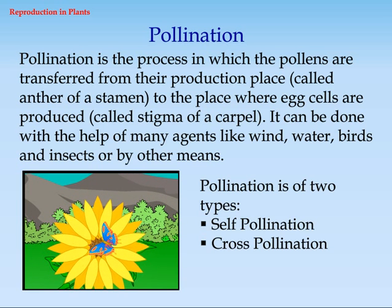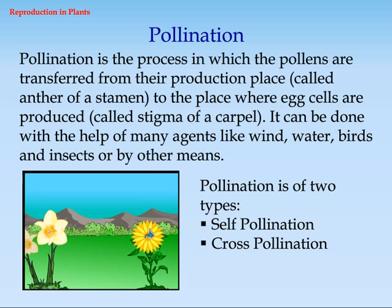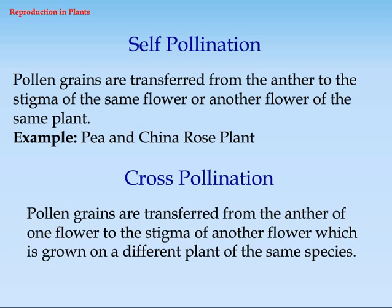Pollination is of two types: self-pollination and cross-pollination. Self-pollination: pollen grains are transferred from the anther to the stigma of the same flower or another flower of the same plant. Cross-pollination: pollen grains are transferred from the anther of one flower to the stigma of another flower grown on a different plant of the same species.